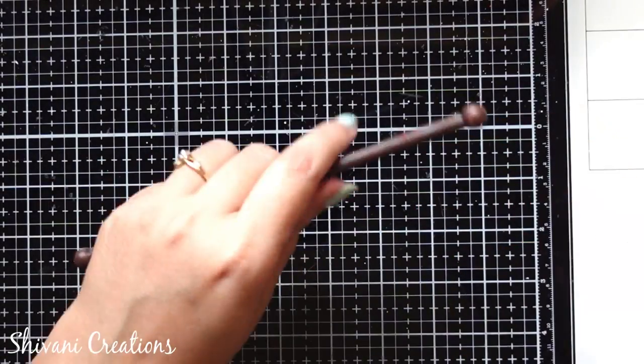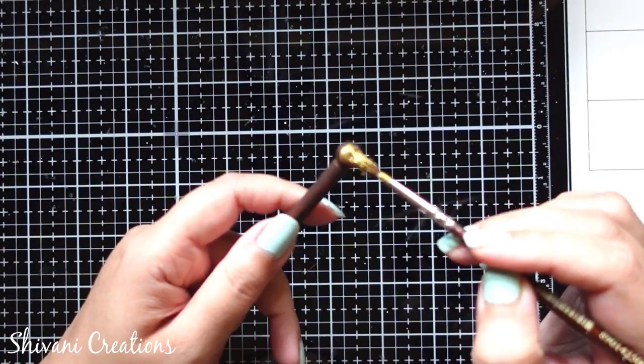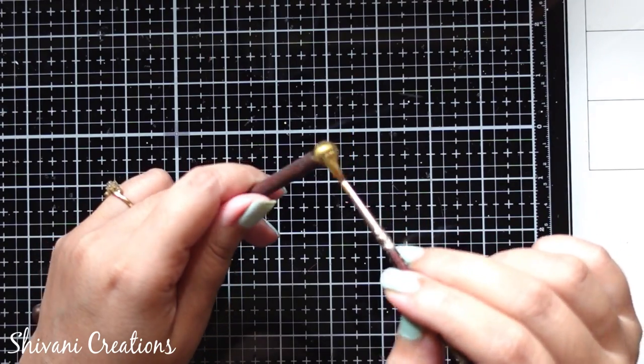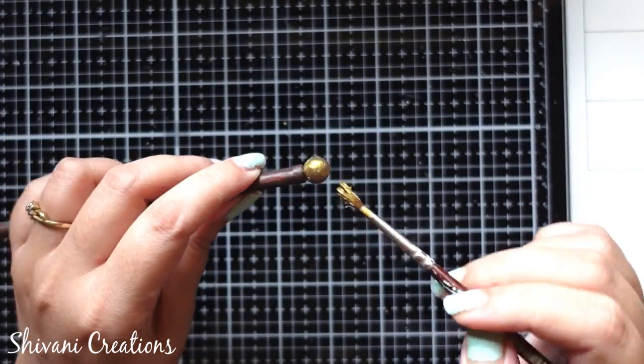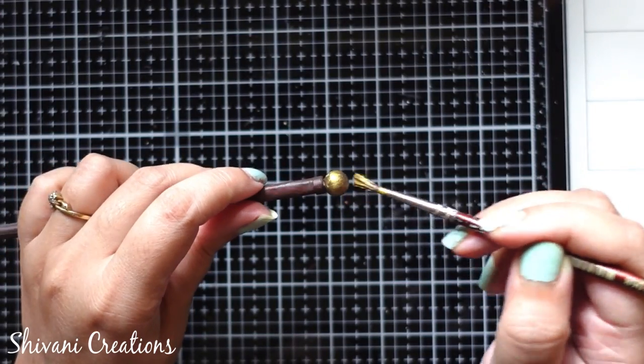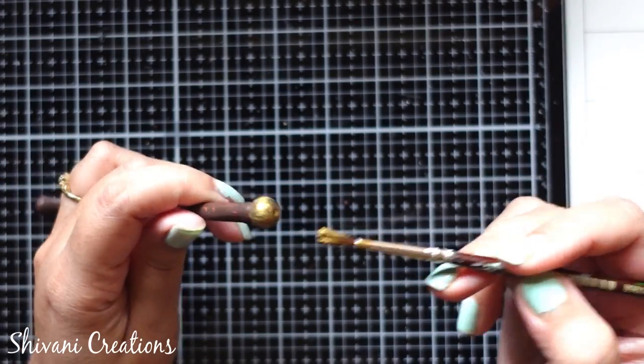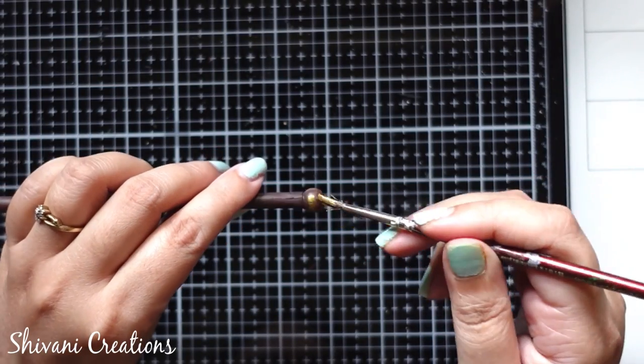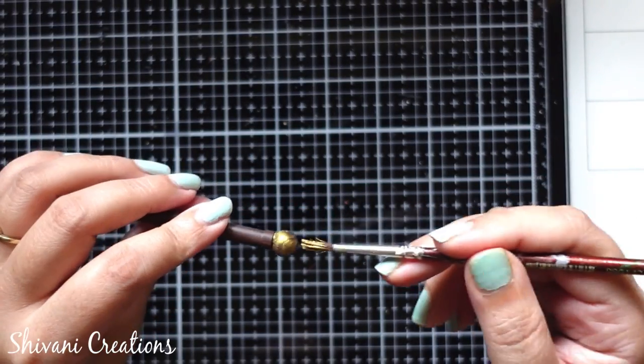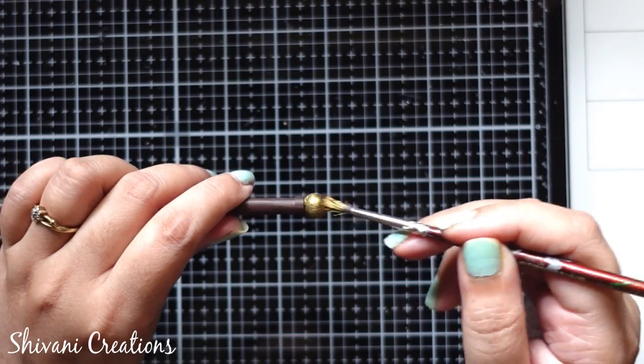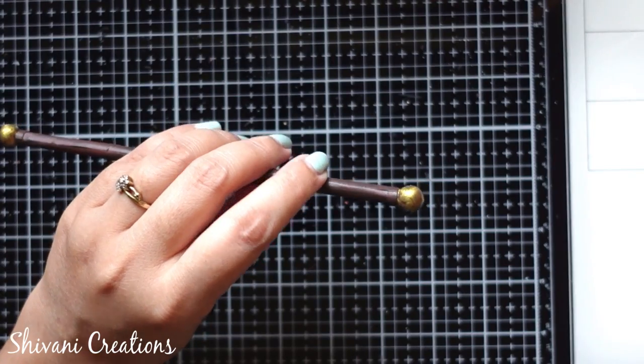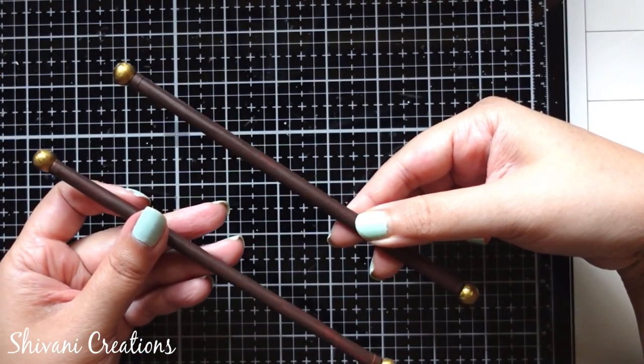Now using gold acrylic color, I am just coloring the pearl part. Similarly, I have prepared another one. So this is done.